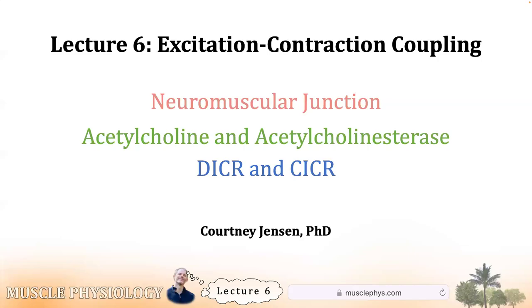This is Lecture 6. In Lecture 5, we covered the brain's involvement in voluntary motor actions. We went through action potentials, distinguished upper and lower motor neurons, and made it to the neuromuscular junction. In this lecture, we'll jump that junction and complete the muscle contraction. Altogether, this is called excitation-contraction coupling.